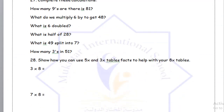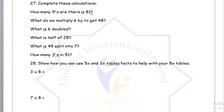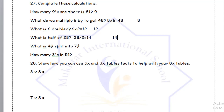Let's move on to question 27: complete these calculations. How many 9s are there in 81? The answer is 9, since 9 times 9 is 81. What do we multiply 6 by to get 48? We multiply it by 8, so the answer is 8. What is 6 doubled? 6 doubled equals 6 times 2, which is 12. What is half of 28? That's 28 divided by 2 — the answer is 14. What is 49 split into 7? That is 49 divided by 7 — the answer is 7. How many 3s in 51? I need to divide 51 by 3, and the answer is 17.